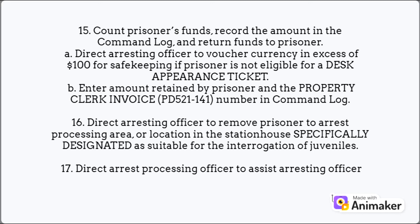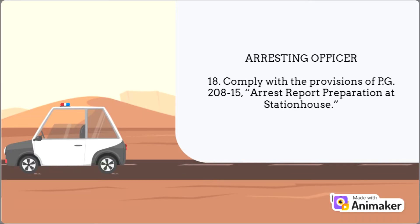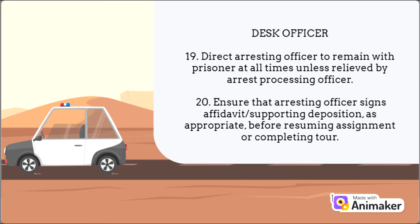Step 15: count prisoner's funds, record the amount in the command log, and return funds to prisoner. Direct arresting officer to voucher currency in excess of $100 for safekeeping if prisoner is not eligible for a desk appearance ticket. Enter amount retained by prisoner in the property clerk invoice PD 521-141 number and command log. Step 16: direct arresting officer to remove prisoner to arrest processing area or location specifically designated for the interrogation of juveniles.